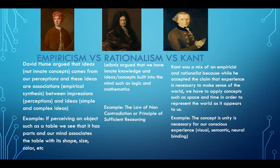Rationalists like Leibniz argue that we do have innate knowledge and concepts built into the mind, such as logic and mathematics. An example is the law of non-contradiction: I can't be in Boston and Japan at the same time — that's a contradiction. Another example is the principle of sufficient reason, which holds that there is a sufficient reason for phenomena we experience, such as the space between objects in space and time.